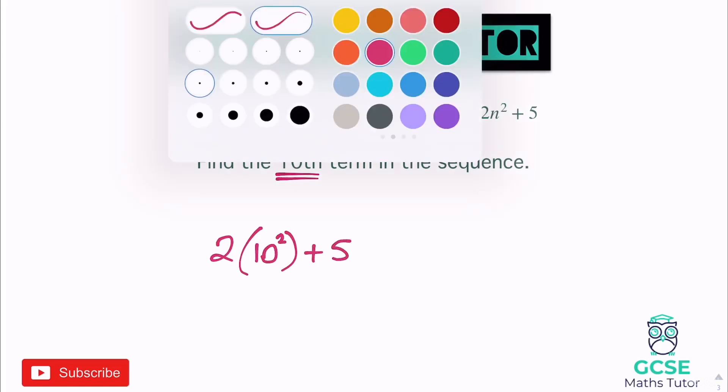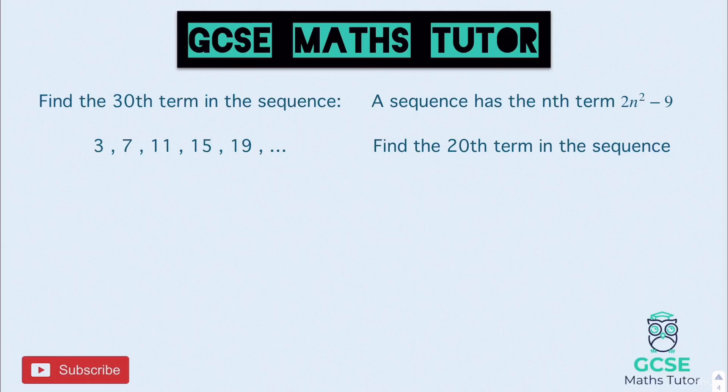Remember your order of operations — work out the powers first, which is why I've put 10 squared in brackets. Ten squared is 100. So two times 100 is 200, and adding 5 gives us 205. Don't forget to check the video on substitution if that threw you — the key is substituting 10 in place of n, so n squared becomes 10 squared, which is 100.